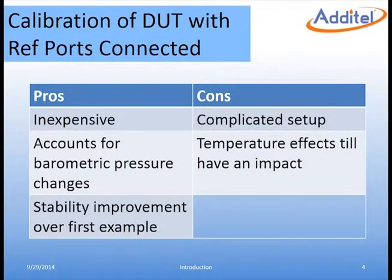In this method, the equipment is relatively inexpensive and does a much better job accounting for errors caused by changes in the environment. By having the low lines connected together, the measurement is more stable at each point. This setup is more complicated than the first example.